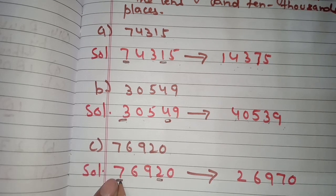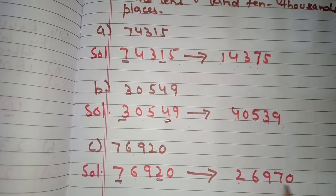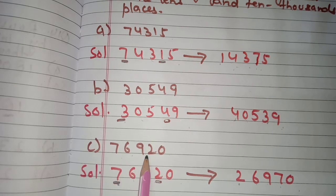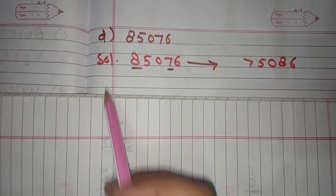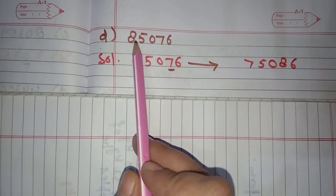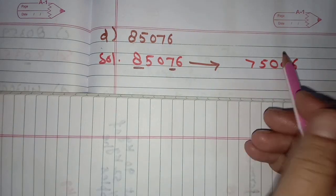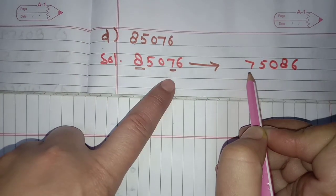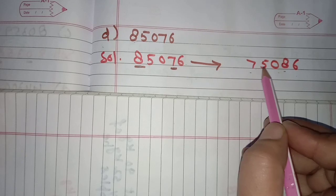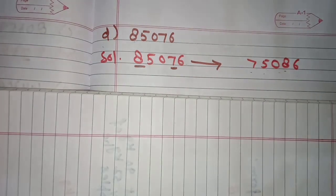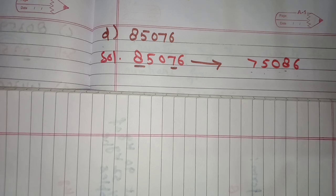Part c: 76,920 — interchange ten thousands (7) and tens (2): 2 in place of 7 and 7 in place of 2; 6, 9, 0 remain. Earlier seventy-six thousand nine hundred twenty, now twenty-six thousand nine hundred seventy. Part d: 85,076 — interchange ten thousands (8) and tens (7): 7 in place of 8 and 8 in place of 7; 5, 0, 6 remain. Now it is seventy-five thousand eighty-six. This is how you solve all the questions of this exercise.